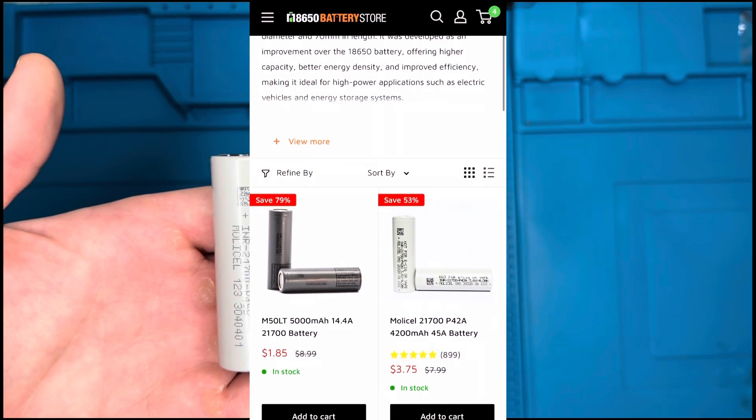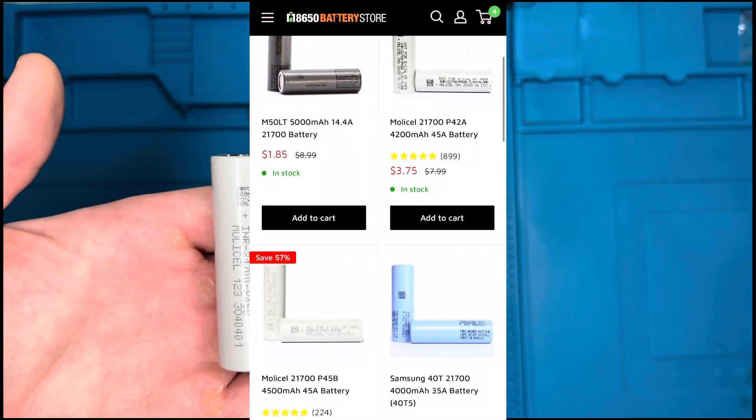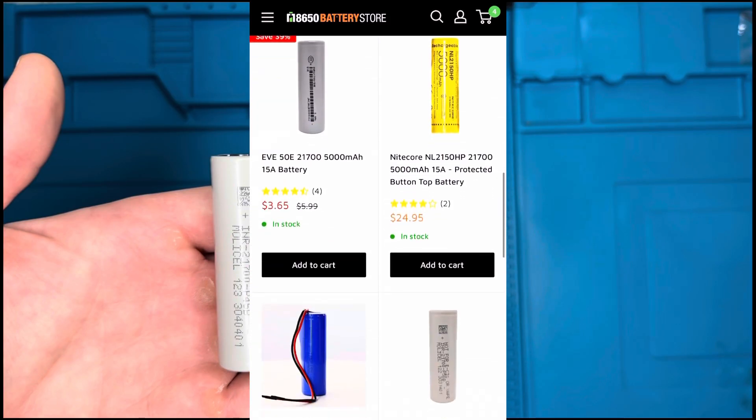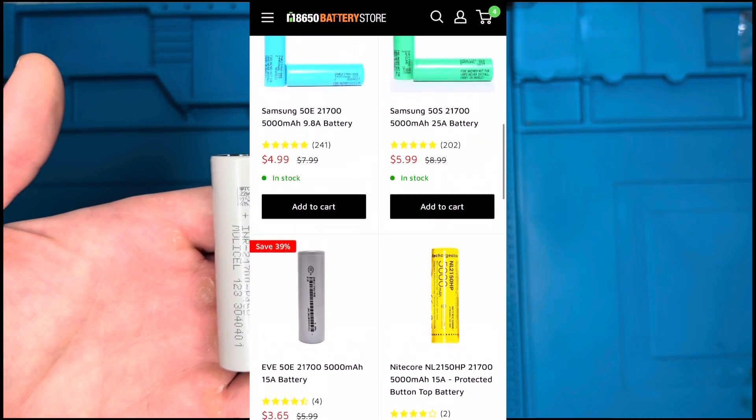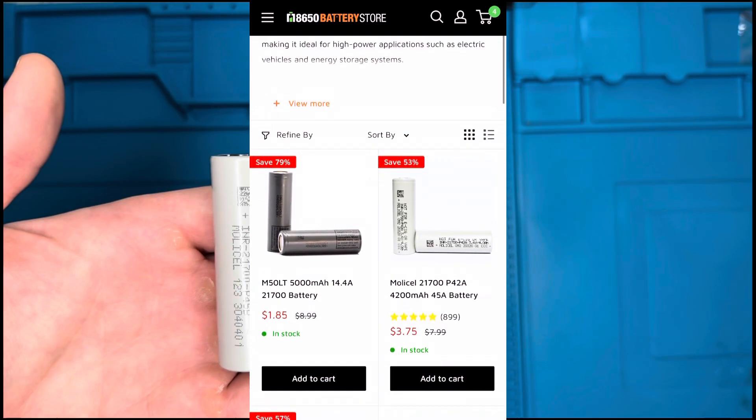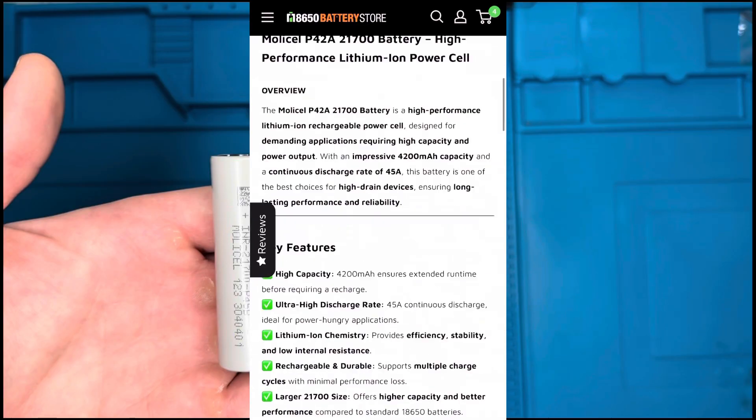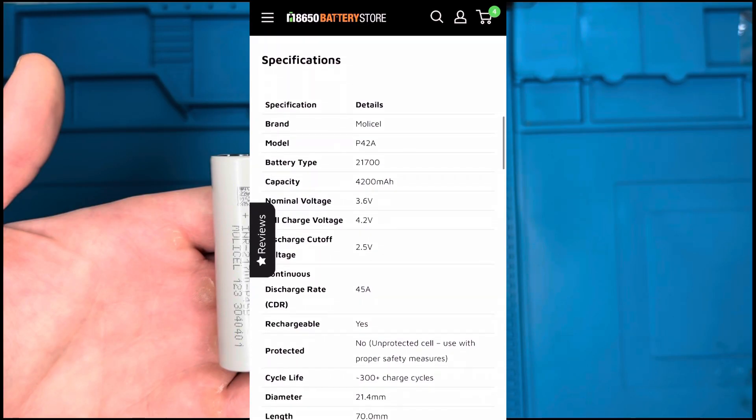You can choose from two different sizes and you're going to be looking at the amp rating, which will usually be in the title. You want at least 20 amps or higher, the more the better. These MOLI cells are really good value for the money with high capacity, high discharge rating.